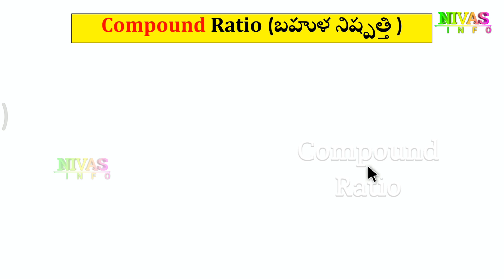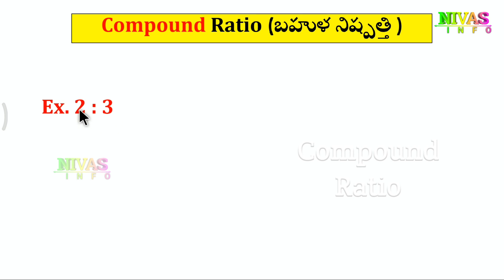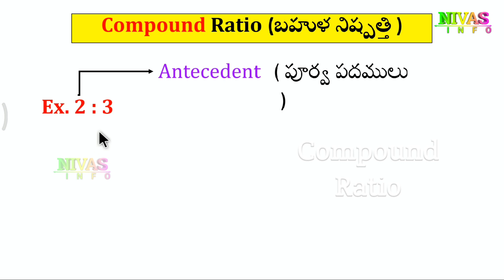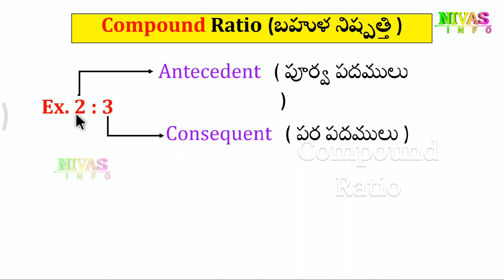Let's show some examples. Here we have 2 is to 3. In this ratio, 2 is the antecedent — the first term — and 3 is the consequent. We can also have two or more ratios.